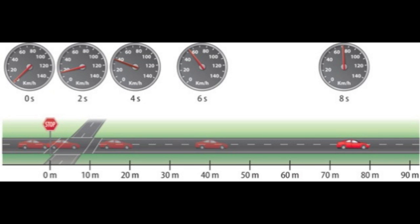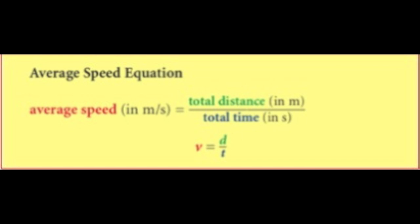Which brings us to average speed — and we are going to be working a lot with average speed. The next video will show you examples of how to calculate average speed using total distance and time. The average speed is equal to the total distance traveled divided by the time it takes to travel that distance. Like force, mass, and acceleration problems, there are three variables, so if you have two, you can calculate the missing one.